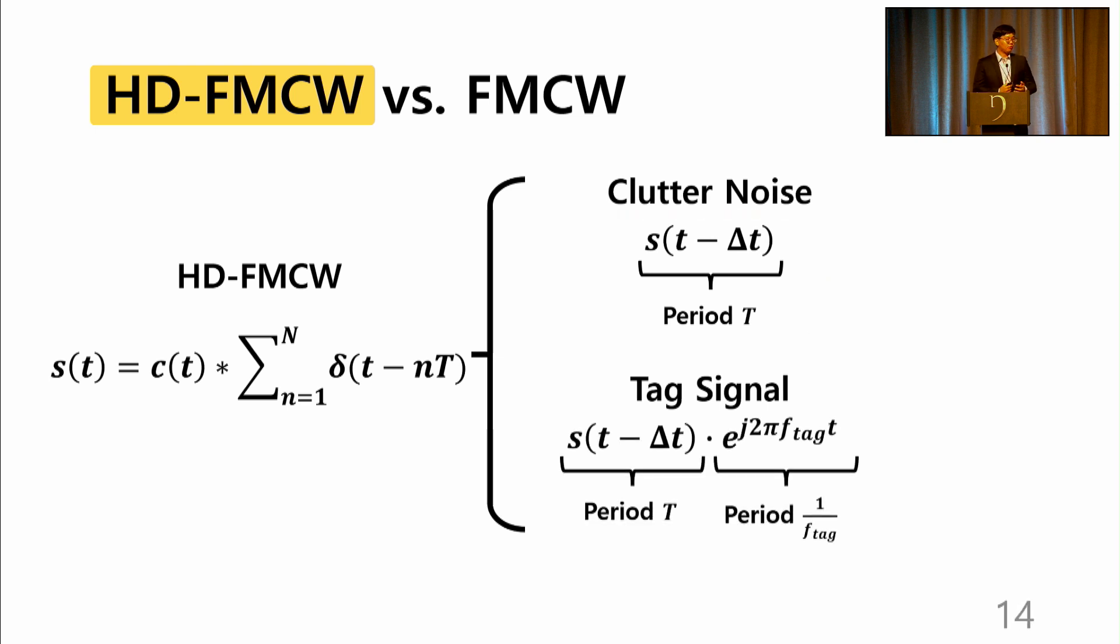In the meanwhile, the tag signal does not comply to the period T. This means that the tag response is no longer represented at the integer multiples of 1 over T hertz. Instead, the tag signal is represented at the empty bins of HD-FMCW. As a result, tag signal is essentially isolated from the clutter noise.